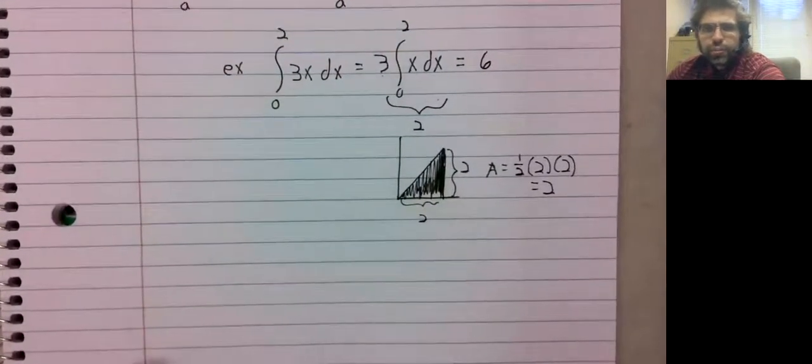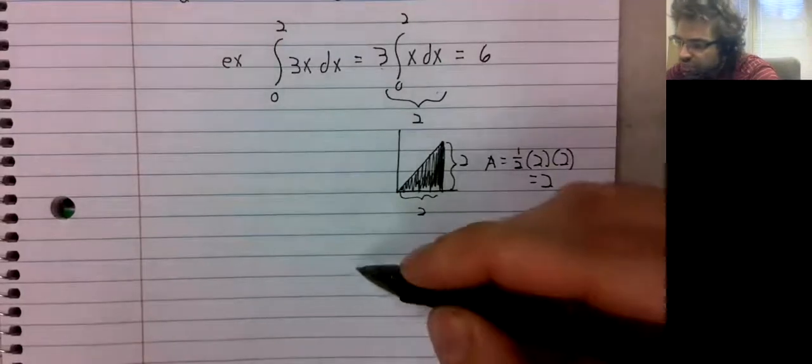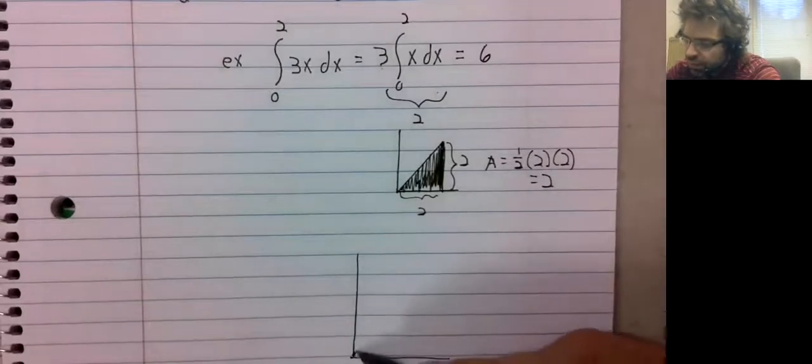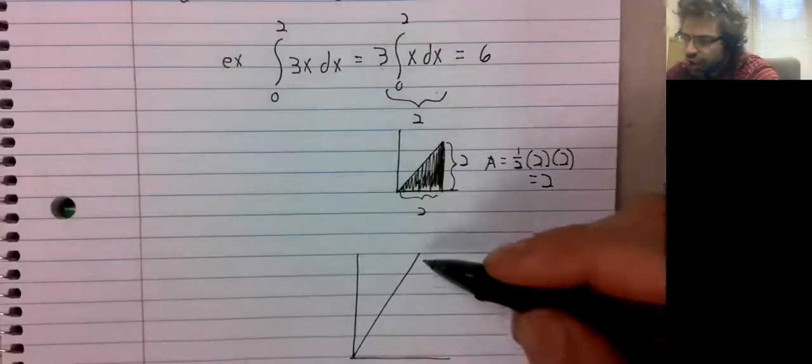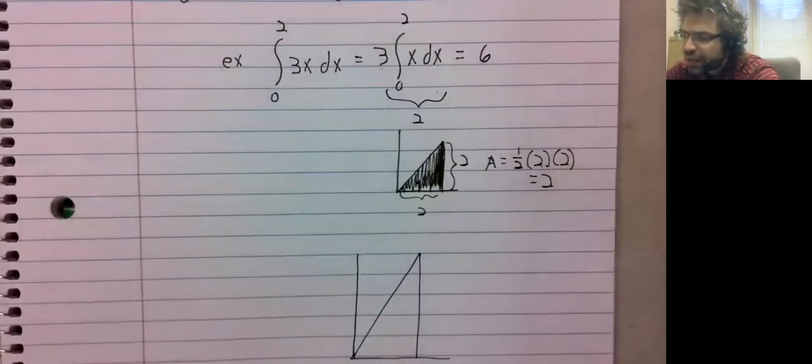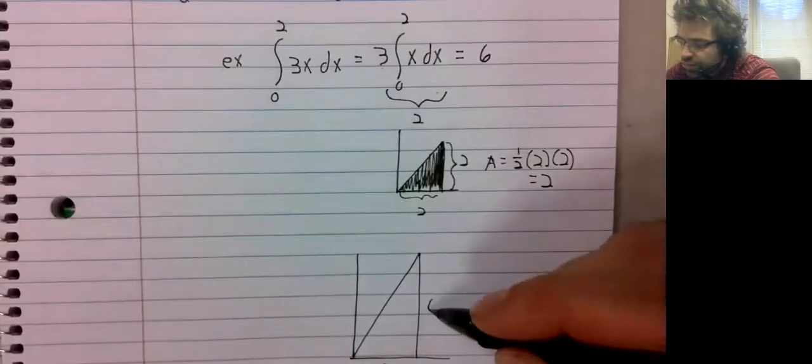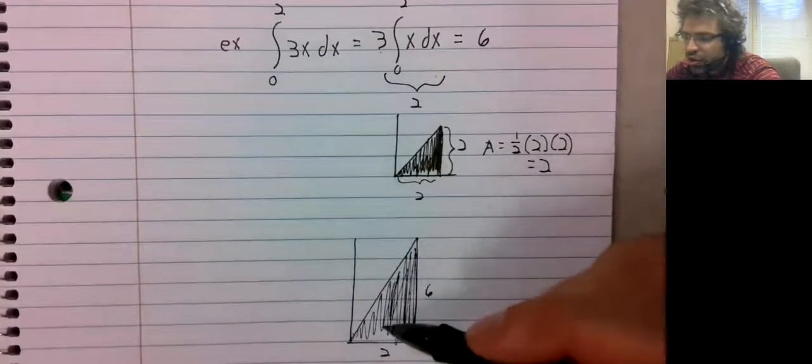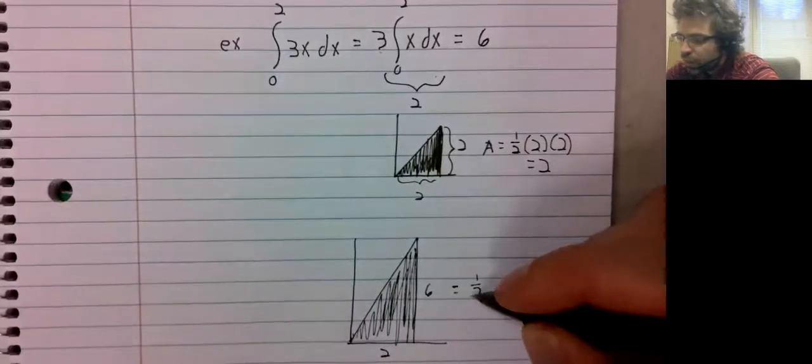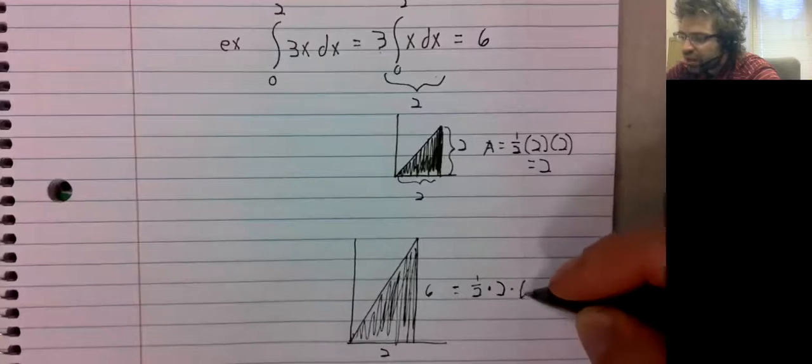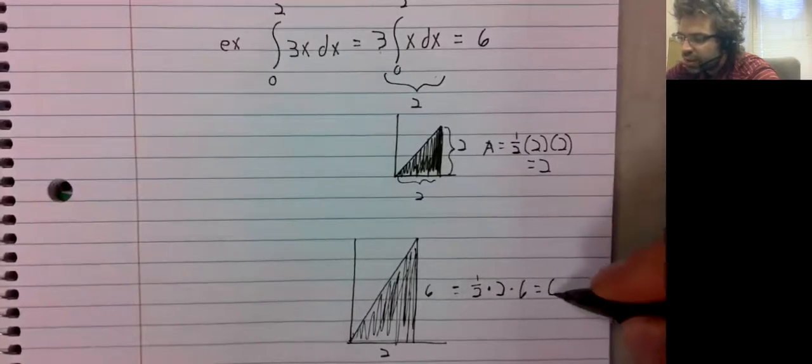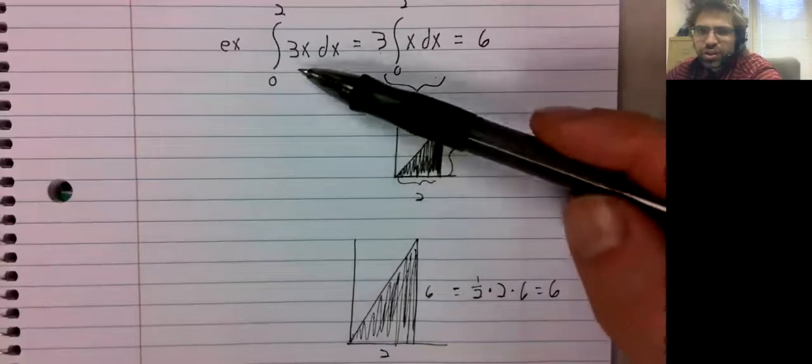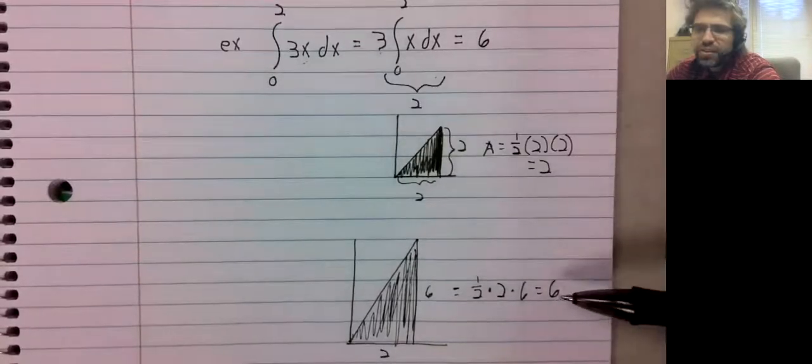And we could check this. I mean, the area under 3x is also something we can compute directly. One half times the base times the height geometrically, this area, which is this integral, is a 6.